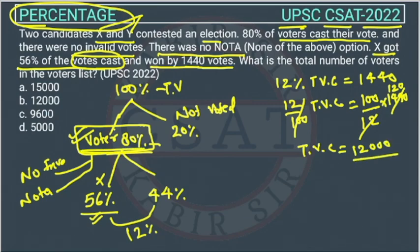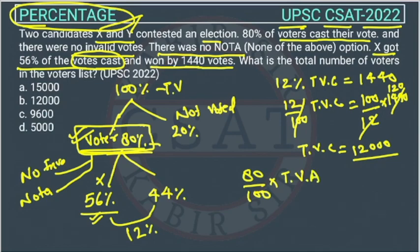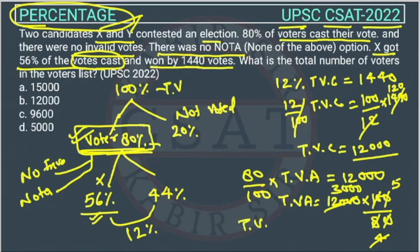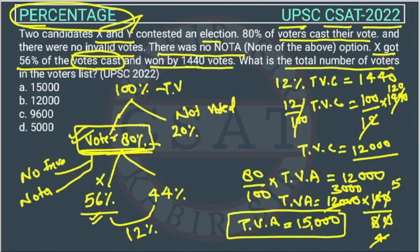Total votes cast is 12,000, and this represents 80% of the total votes available. So 12,000 equals 80% of total voters. Therefore, total votes available = 12,000 × 100 ÷ 80 = 15,000.